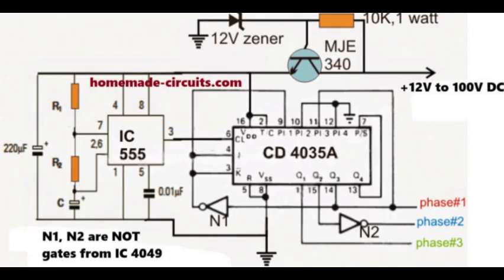But in our design, we are using only Q1, Q2, and Q3 for the outputs. We take Q1 as phase number one, Q2 as phase number two, and Q3 as phase number three.